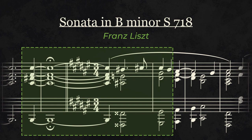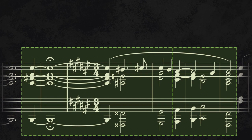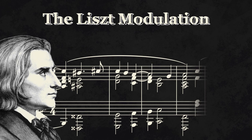In just three chords, Liszt moves between two distantly related keys and finishes the phrase coherently in VII. This is Polychord Productions, and today I'll be explaining the Liszt modulation.